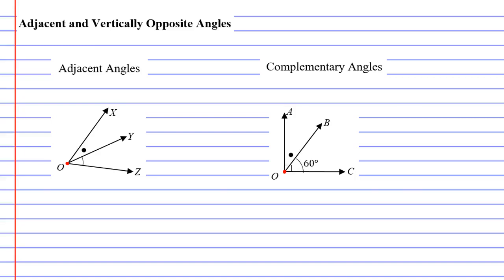In this video, we're going to talk about adjacent and vertically opposite angles. I'm going to start by explaining the word adjacent. Adjacent means next to, or it can mean adjoining.